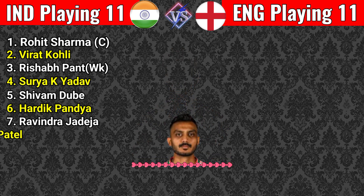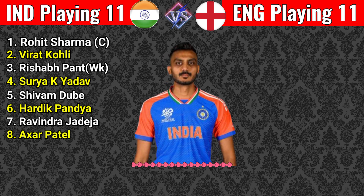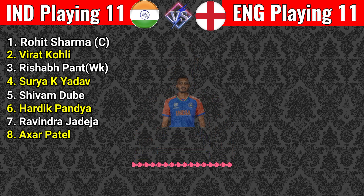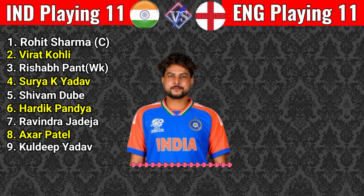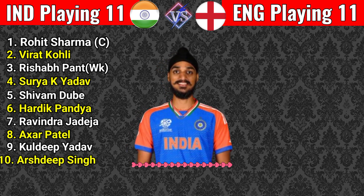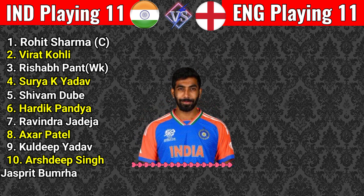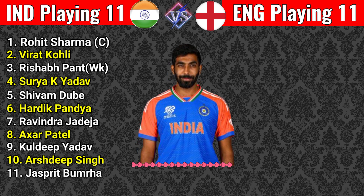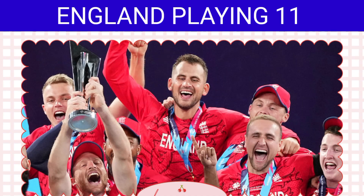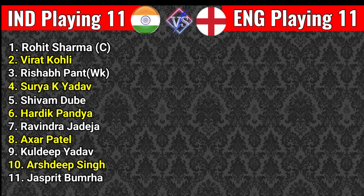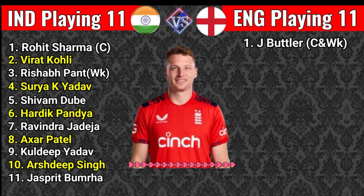Number six: Hardik Pandya, batting all-rounder. Number seven: Ravindra Jadeja, bowling all-rounder. Number eight: Akshar Patel, bowling all-rounder. Number nine: Kuldeep Yadav, spin bowler. Number ten: Arshdeep Singh, fast bowler. Number eleven: Jasprit Bumrah, fast bowler. England best playing 11: Number one: Jos Buttler, captain and wicketkeeper batsman.